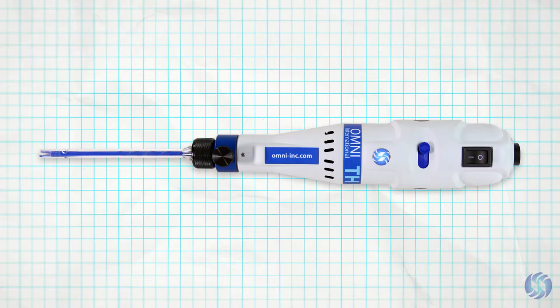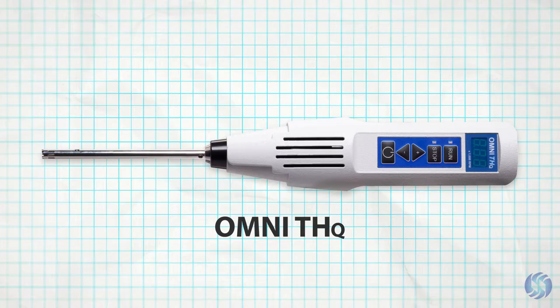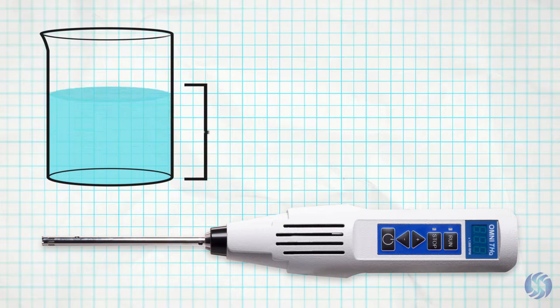For applications requiring precision and repeatability, the Omni THQ combines a digital speed display with quiet brushless motor technology to process up to 100 milliliters sample volumes.